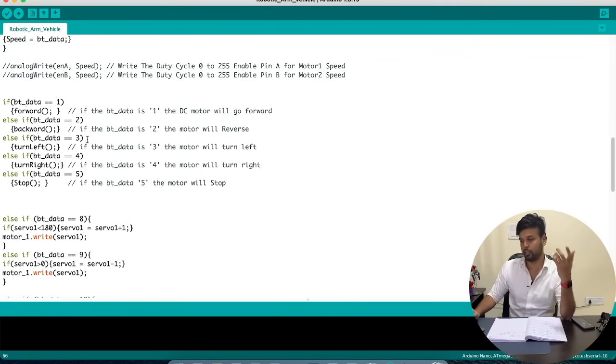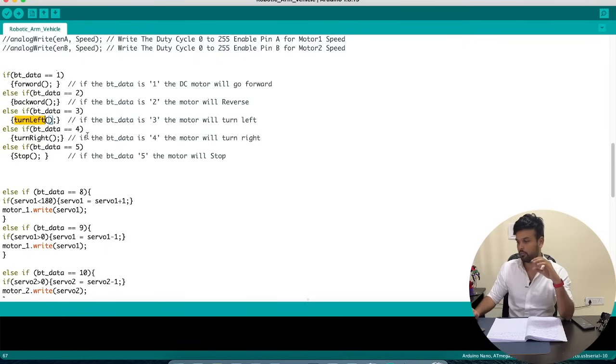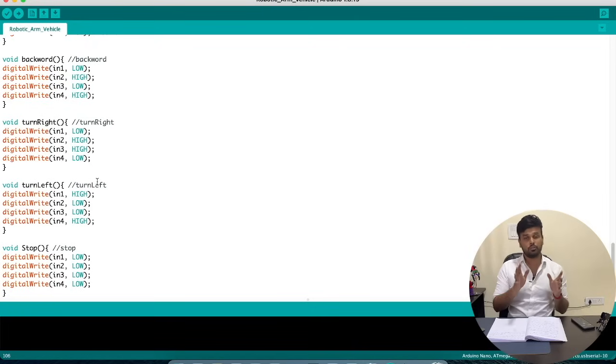I will show them later. So for example if we receive the data three then the robot will turn left. If we receive the data two the robot will move backward. So likewise we have defined different functions for a specific number that we would receive from our Bluetooth module. So this is pretty much a very simple program. There is nothing much complicated.